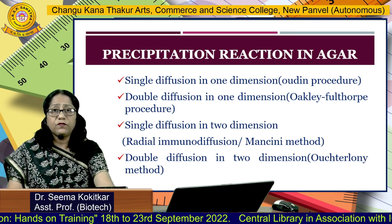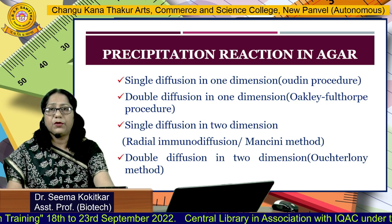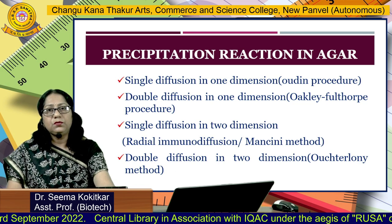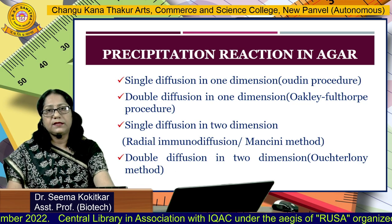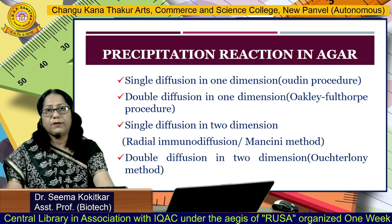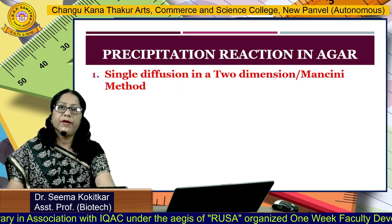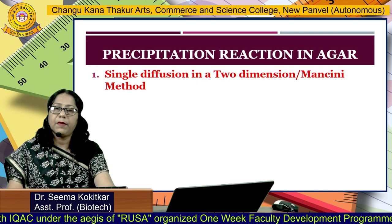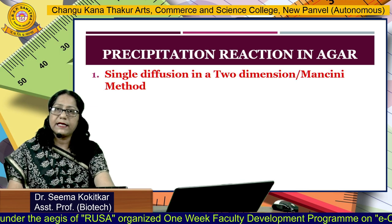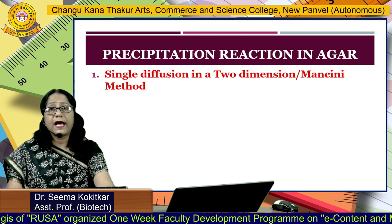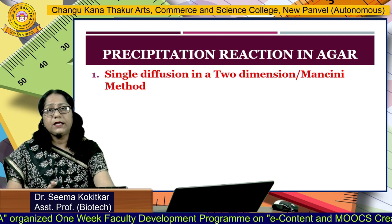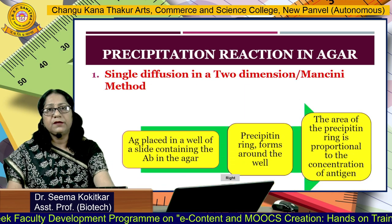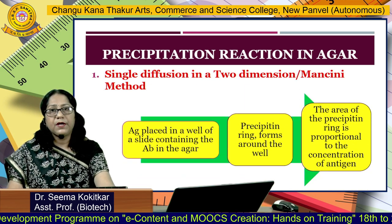The first two methods are not used in the laboratory nowadays. So I will be mainly focusing on the last two methods — radial immunodiffusion and double diffusion. We will be talking about single diffusion in two dimensions, called the Mancini method. Why do we call this technique single diffusion? Because out of antigen and antibody, only one — either antigen or antibody — moves. And because the movement is in the radial direction, we call it two dimensions.